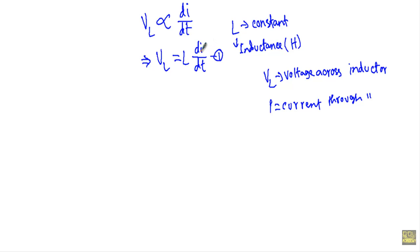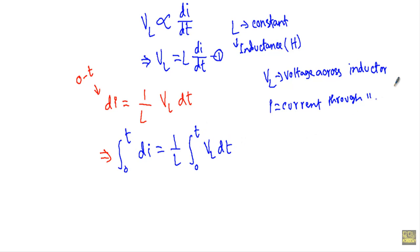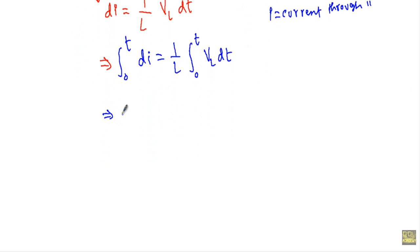Let's call that equation number one. To establish the relationship between current and voltage, I take dI to one side: dI = (1/L) · VL · dt. Now if I allow current to flow through the inductor for the time interval zero to t, I can integrate both sides over that interval. Since L is constant, I take it outside the integration: integral from zero to t of VL dt.